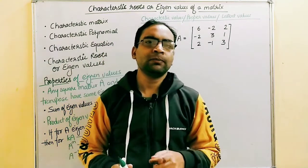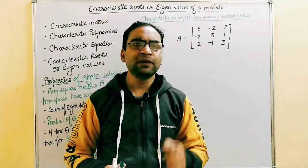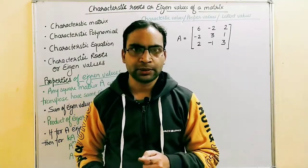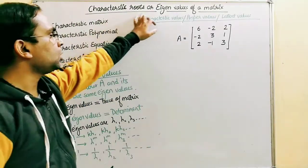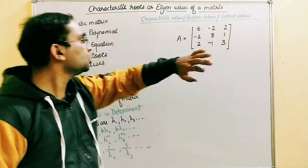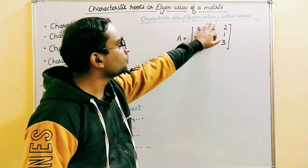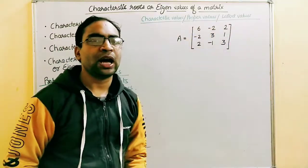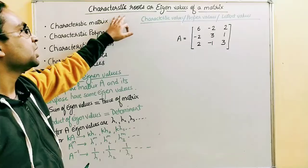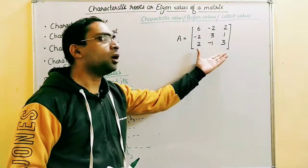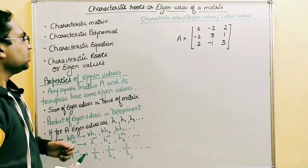In today's lesson we will talk about characteristic roots and eigenvalues of a matrix. Characteristic roots or eigenvalues of a matrix are also known as characteristic values, proper values, or latent values. Let's see how we can find out these characteristic roots or eigenvalues of a given matrix.